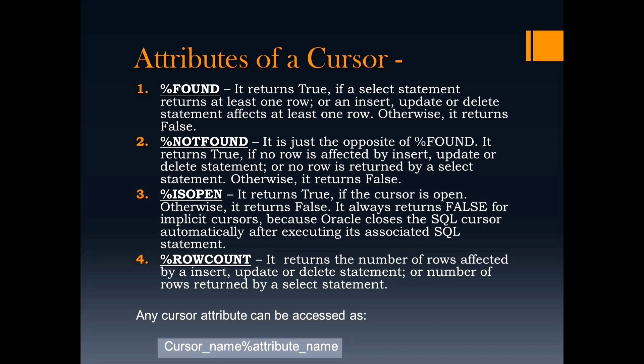Next is %ISOPEN. It returns true if the cursor is open; otherwise it returns false. Note that it always returns false for implicit cursors, as Oracle closes the SQL cursor automatically after executing its associated SQL statement. The last attribute is %ROWCOUNT. It returns the number of rows affected by INSERT, UPDATE, or DELETE statement, or the number of rows returned by the SELECT statement. The syntax of using any attribute is given below.